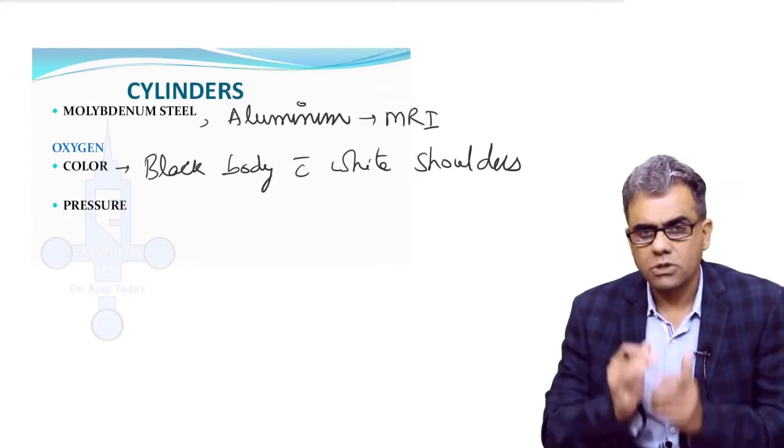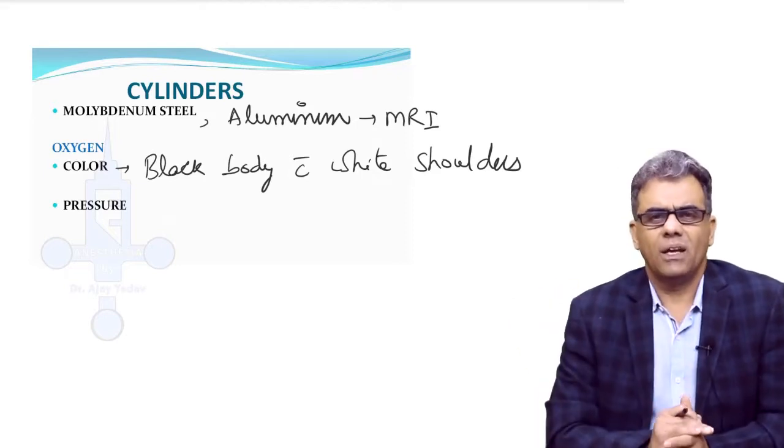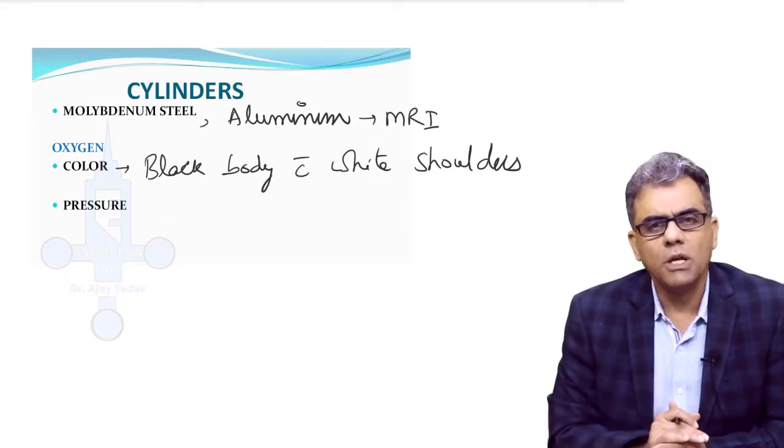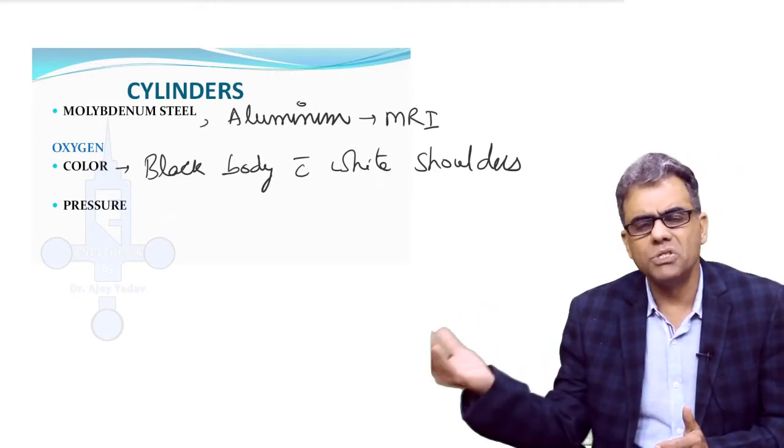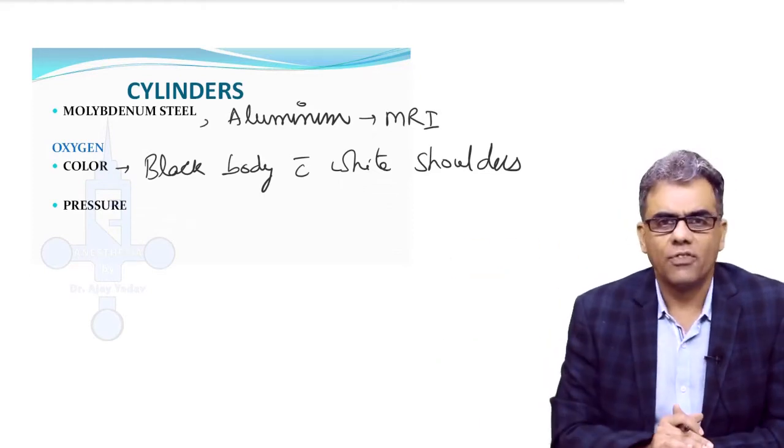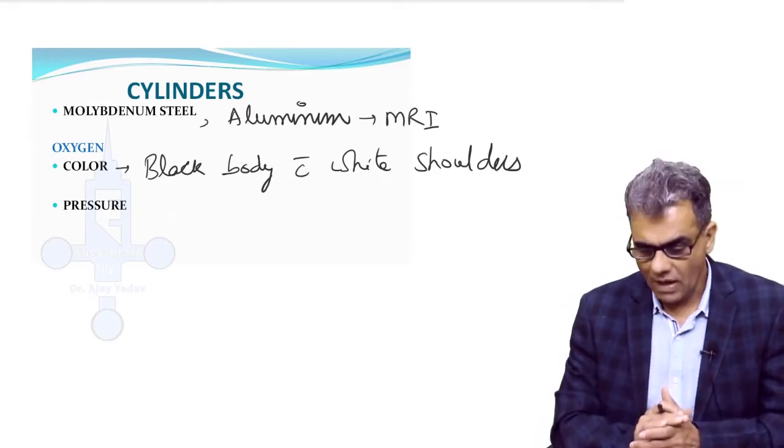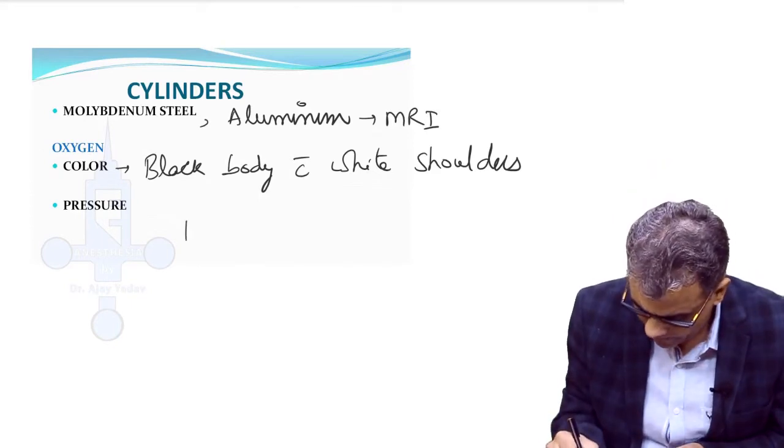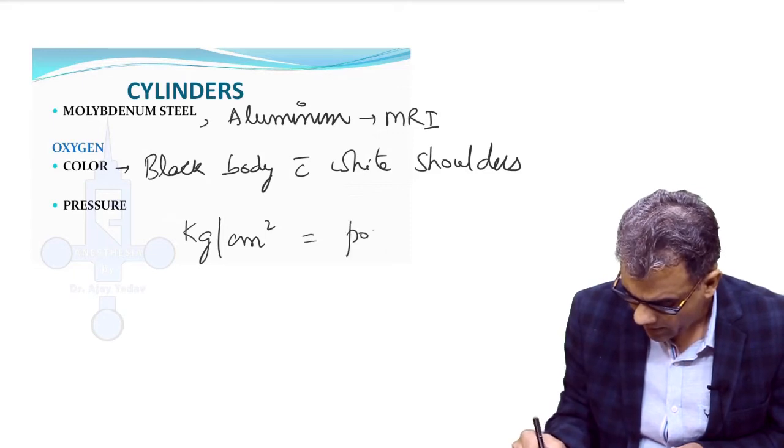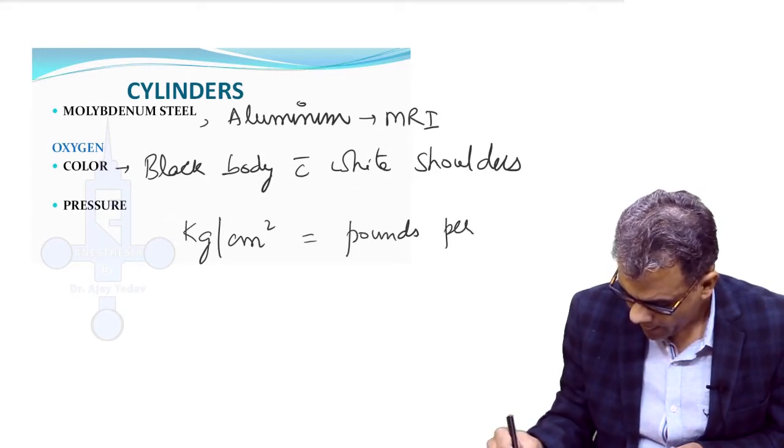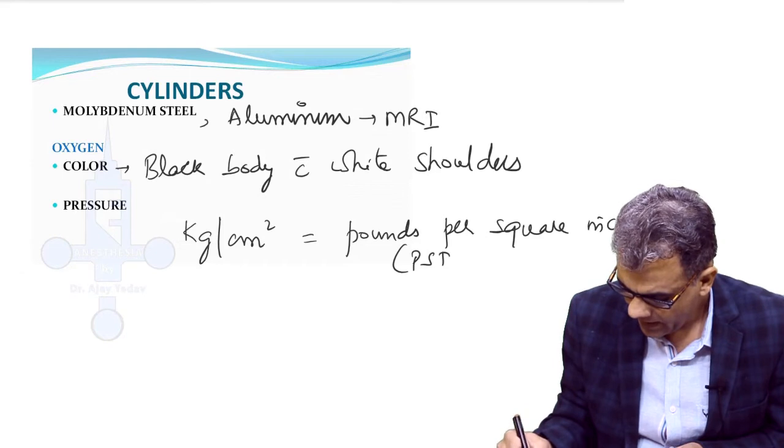Second thing I told you about cylinders that you have to remember is the pressure. Regarding pressure, in your books you will see that so many units have been used: Pascal, Kilopascal, Mbar, Torr, mmHg, because different countries are using different units. But definitely you need not remember about other countries; you have to only remember about India. In India, the two units which we are using are kilogram per centimeter square and pounds per square inch, or you can say psi.